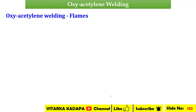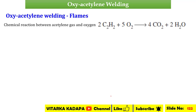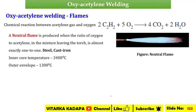Oxygen and acetylene are mixed, and a chemical reaction takes place: 2C₂H₂ + 5O₂ → 4CO₂ + 2H₂O. The first type is a neutral flame. In the neutral flame, the ratio of oxygen to acetylene in the mixture leaving the torch is approximately 1:1. This neutral flame is used for welding steel and cast iron.